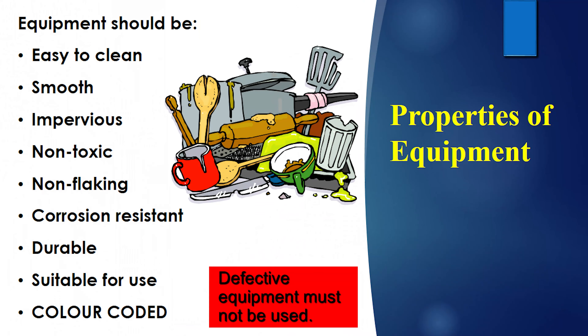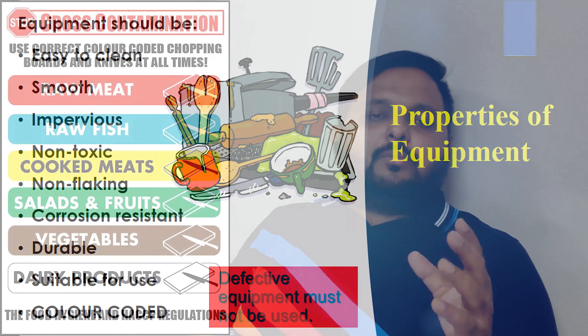For equipment management, many pieces of equipment are selected by managers before base staff arrive. The properties of equipment are straightforward: they should be rust-proof or rust-resistant, ideally made of stainless steel, or good-quality plastic. They should be easy to clean and smooth, with no cracks or gaps that could accumulate food debris. They should be impervious and non-toxic, and there should be no paint on them, as paint can flake off and get into food.